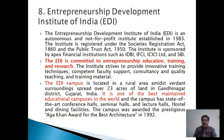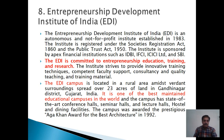The eighth institution is EDI — Entrepreneurship Development Institute of India. EDI is an autonomous, not-for-profit institute established in 1983. The institute is registered under the Societies Registration Act of 1860 and the Public Trust Act of 1950. It is sponsored by apex financial institutions such as IDBI, IFCI, ICICI Limited and SBI. EDI is committed to entrepreneurship education, training and research, and strives to provide innovative training techniques, competent faculty support, consultancy, and quality teaching materials. The EDI campus is located in a rural area spread over 23 acres in Gandhinagar district, Gujarat.